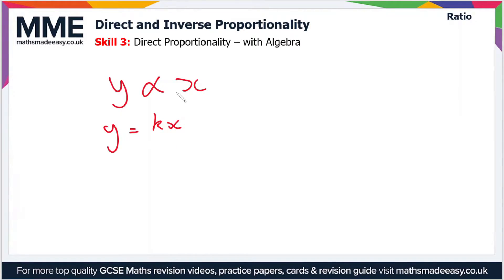If y is proportional to x squared, you can write this as y equals kx². Another example: if y is directly proportional to the square root of x, you could write this as y equals k√x, or if you like, y equals kx to the half.